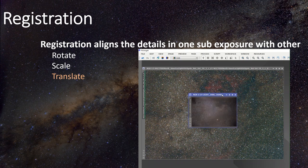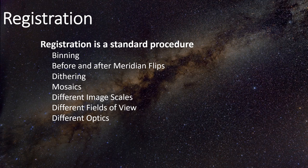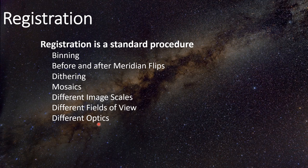Registration is a standard procedure — you use it in all of your imaging: when you're binning, before and after meridian flips, when you're dithering. These are things you do on every session, not just with diverse data, so you're already comfortable using registration. For mosaics, you have to use it to align the various panels. If you have different image scales, different fields of view, or different optics because you goofed or tried an experiment, you still have to use registration. You use it all the time.